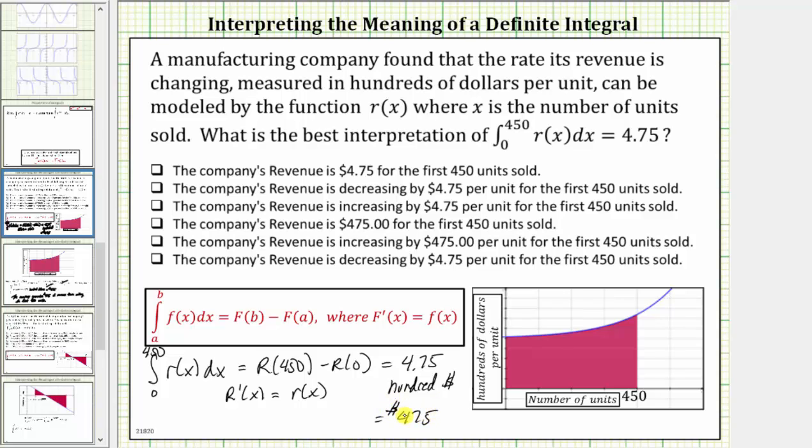So let's go ahead and select the best interpretation of the definite integral. Well, several of these sentences have 4.75 cents rather than 475 dollars, so we can eliminate the first, second, third, and last sentence.